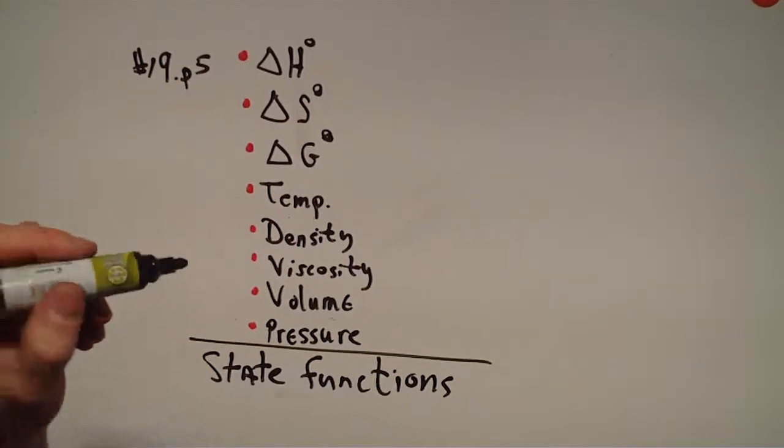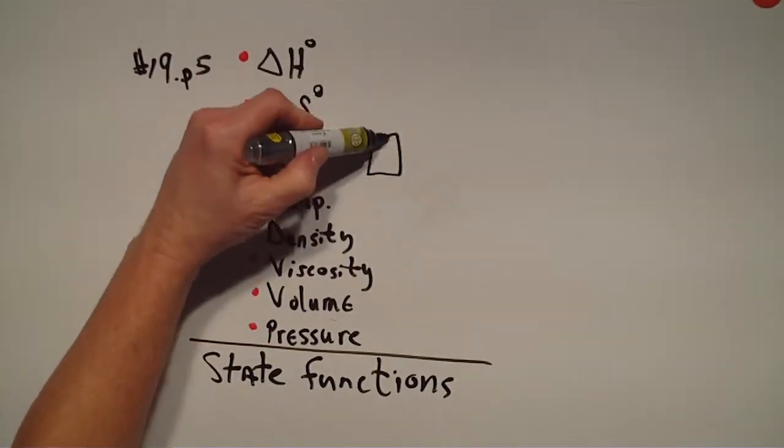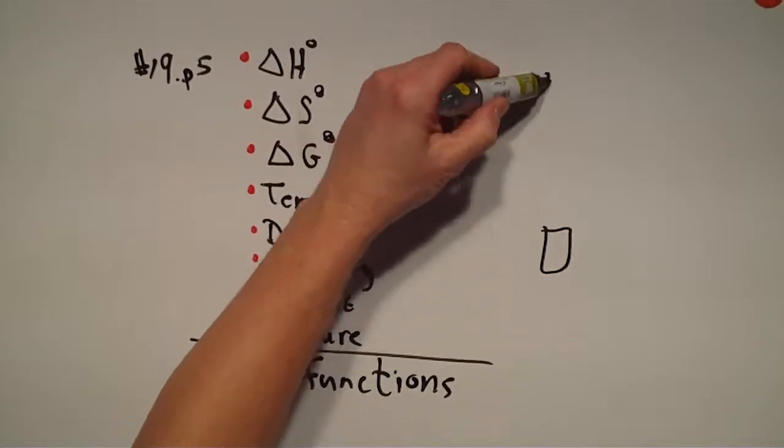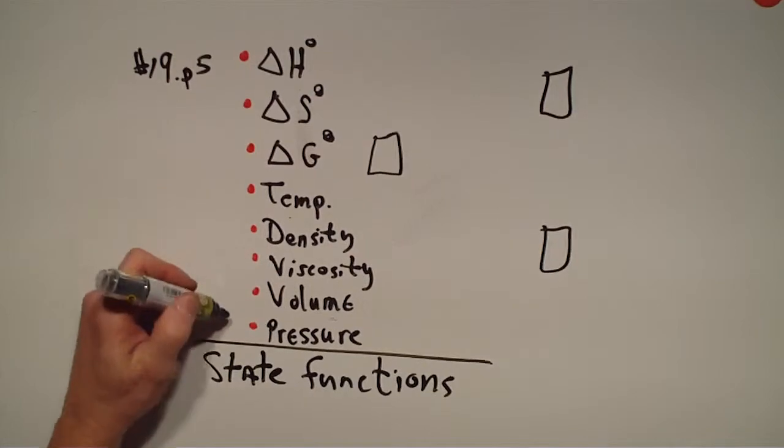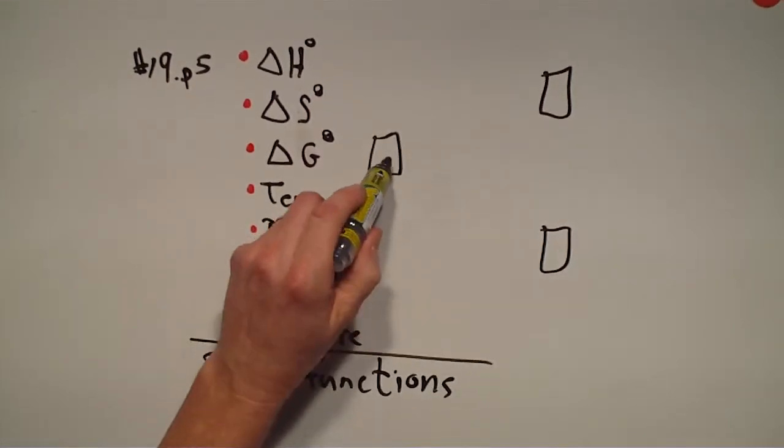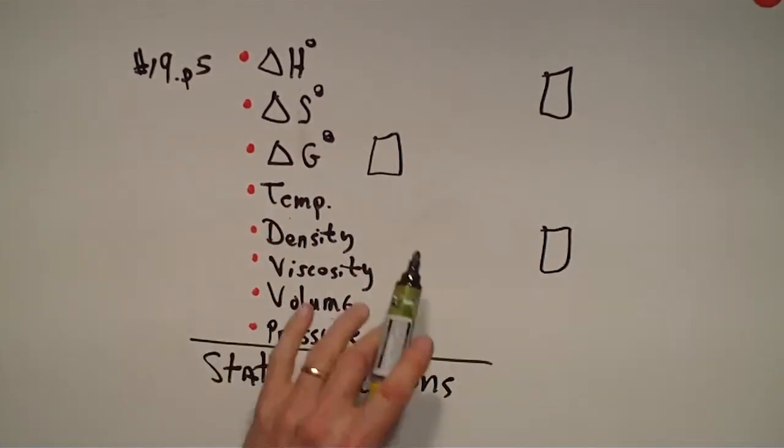So these are places on the map, so to speak, that are fixed. And you have to say exactly what the GPS coordinates are for these things. It's at this given temperature, this given pressure.